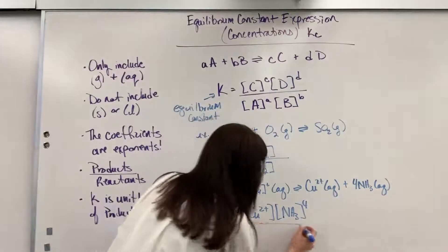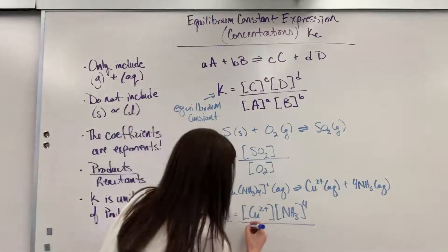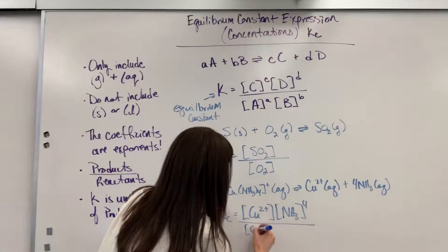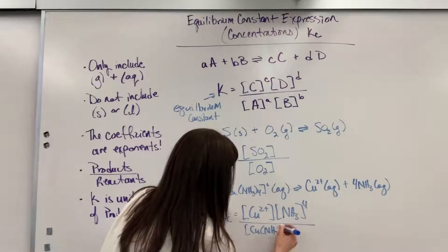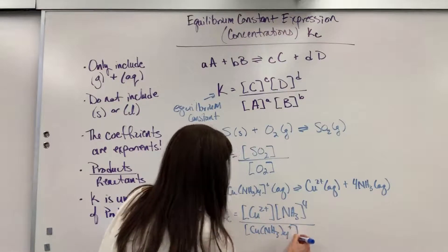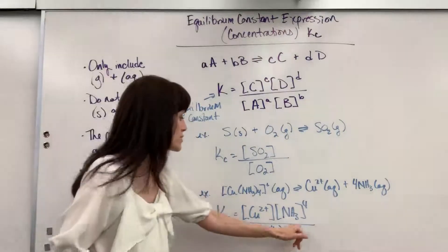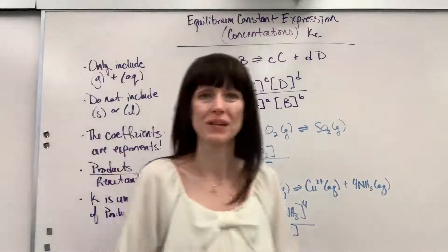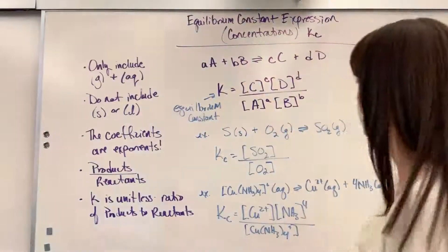Divided by the reactants. And it's going to be this coordination compound. Cu(NH3)4 plus. And that's understood to be 1. So, it's going to be to the power of 1. So, there are a couple of examples for you.